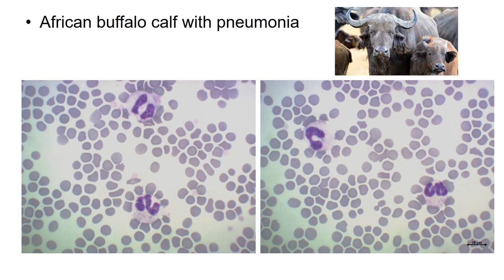Here are blood smear images from a three-month-old African buffalo calf that presented with pneumonia and diarrhea. Most of the neutrophils show really nice toxic changes — Döhle bodies, cytoplasmic basophilia, and vacuolation — and there is an immature nucleus. This animal did not have a leukocytosis, and there was a mild left shift on the blood smear, but the most striking finding was these toxic neutrophils. This emphasizes that in a ruminant it is simply not enough to look at white cell count numbers — you really need to pay very close attention to the morphology of the leukocytes.